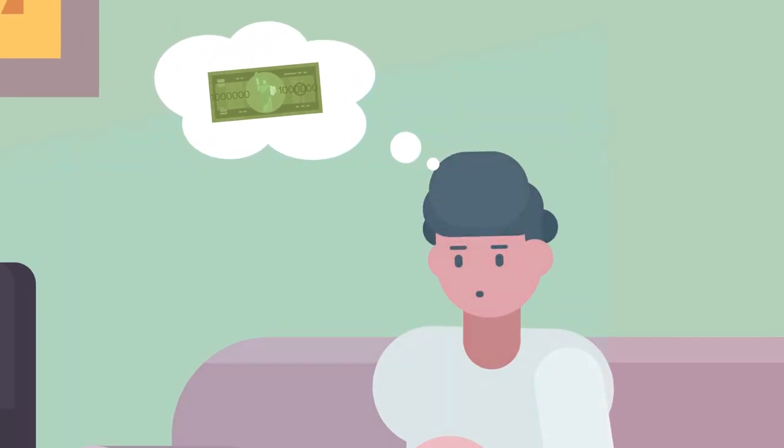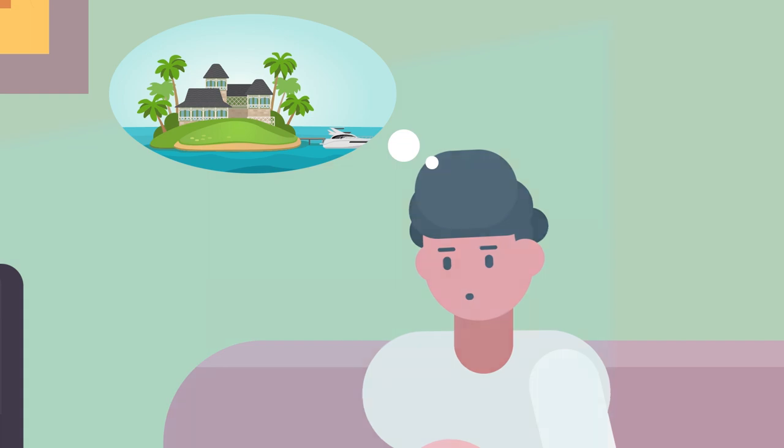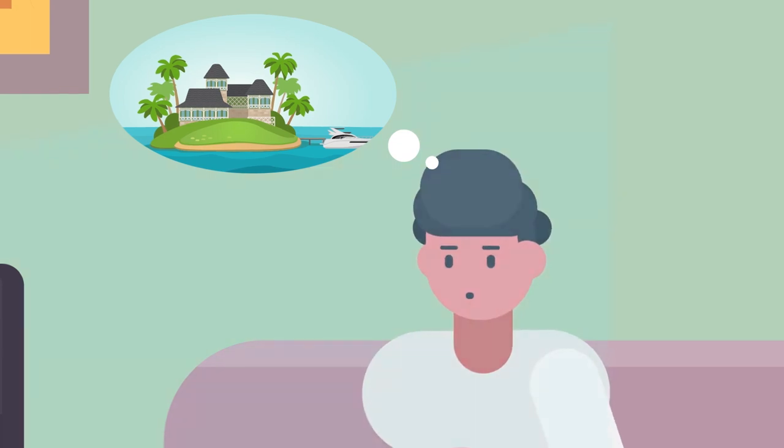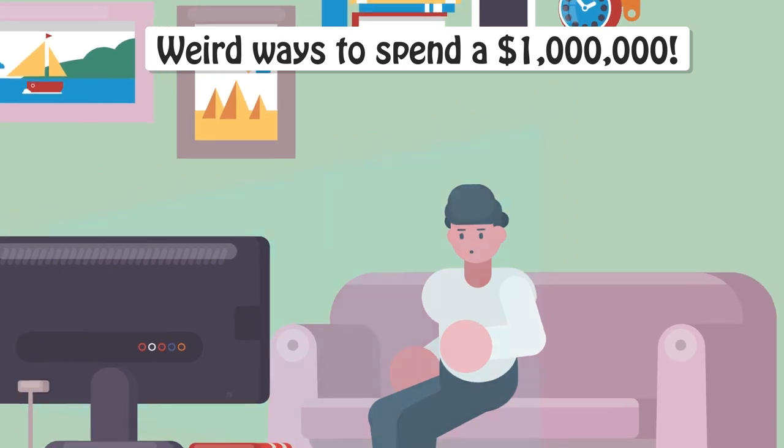On our first What a Million Dollars Gets You Around the World show, we looked at the costs of things typically associated with millionaires, such as private islands, yachts, and expensive homes. For this show, we challenged one of our writers to find weird ways to spend a million dollars.